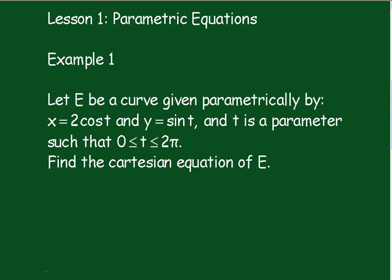Let E be a curve given parametrically by x equals 2 cos t and y equals sin t, and t is a parameter such that t lies between 0 and 2π. Find the Cartesian equation of E.